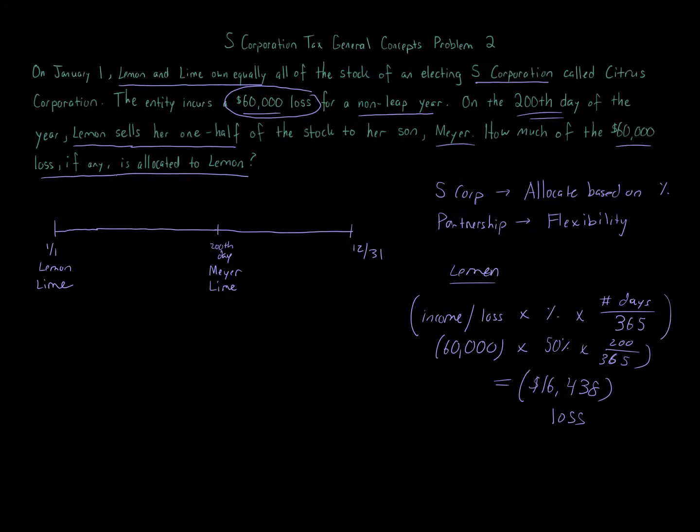If we're calculating Meyer's amount, we would take the $60,000 loss, I'm not going to do the calculation but I'll set it up. We multiply it by 50% because Meyer owned 50% starting on the 200th day going forward, and we take 365 minus 200, which is 165, and we divide that by 365, and you get the amount of loss allocated to Meyer.